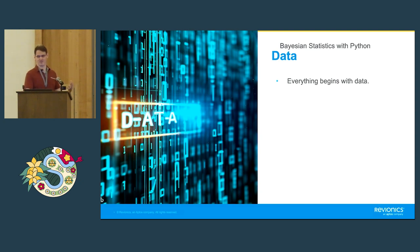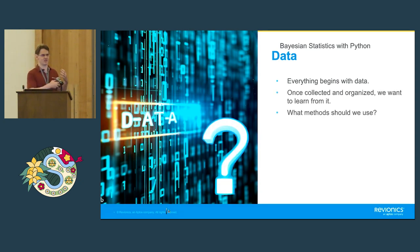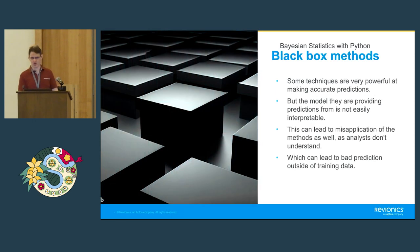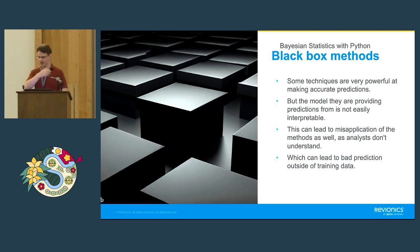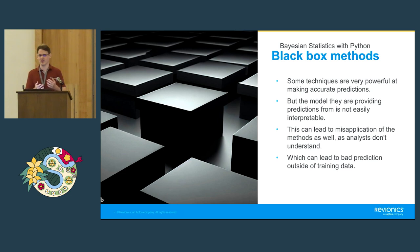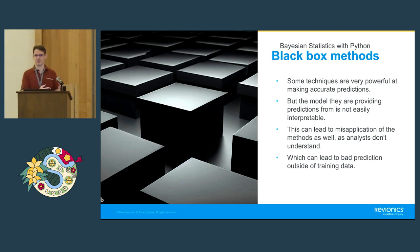In the beginning, you have data — you collect it, organize it, do all your data cleaning and munging — and then you have to decide how you want to do your analysis and answer questions from your data. In modern times, there are a lot of really powerful black box methods that get you great predictions, but the model they're using to get those predictions can be very hard to interpret. You can have lots of parameters, and looking at any individual one is kind of meaningless.